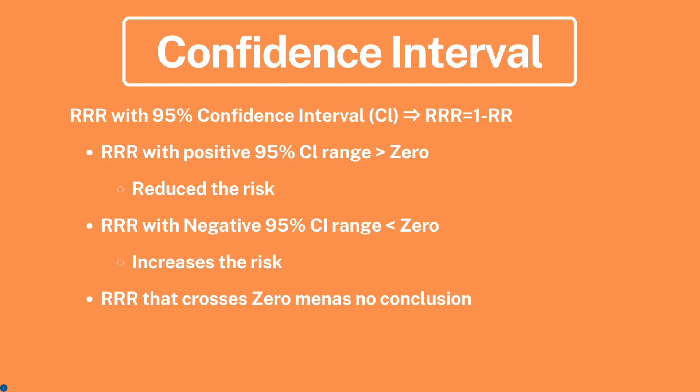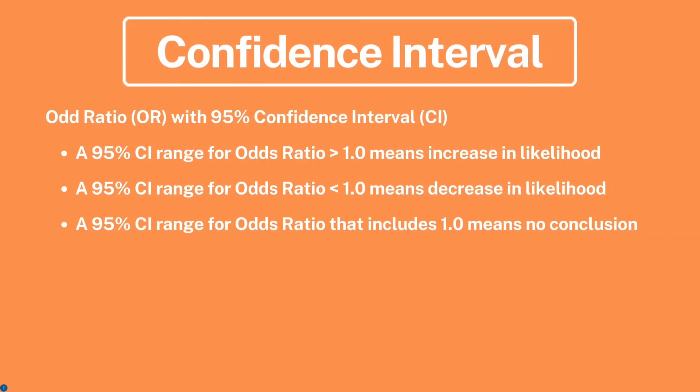If the RRR with a positive 95% confidence interval range is more than zero, then you reduce the risk. If the RRR with a negative 95% confidence interval is less than zero, then you increase the risk. If the RRR crosses zero, there is no conclusion — you'll see more examples of this in sections 2a and 2b.